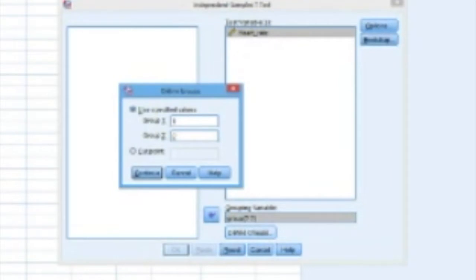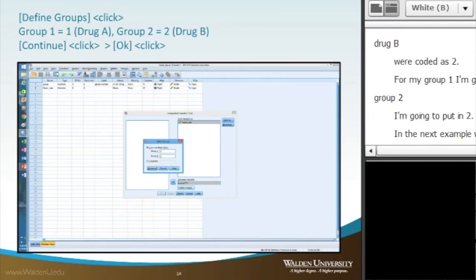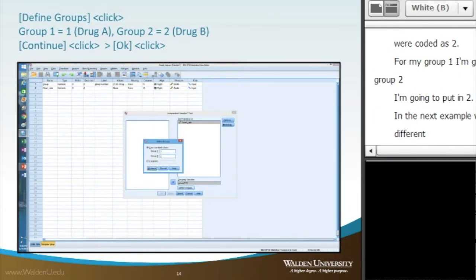But as we'll see in the next example, we're actually going to use a different numerical value for the comparison. At this point, we'll click on continue, and then we'll click on the OK button.